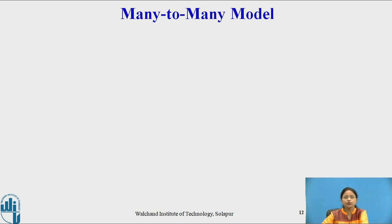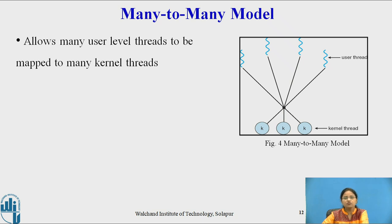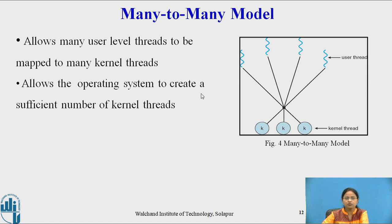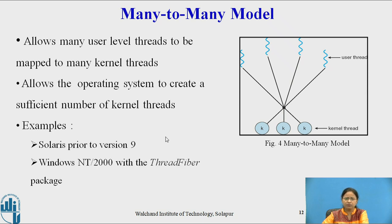The next model is the many-to-many model. This model allows many user level threads to be mapped to a smaller or equal number of kernel threads. For example, four user threads can be mapped to three kernel level threads — the number of kernel threads can be less than or equal to the number of user threads, but not greater. This allows the operating system to create a sufficient number of kernel threads. The many-to-many model is used in Solaris prior to version nine, and also in Windows NT or Windows 2000 with the thread fiber package.